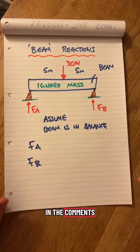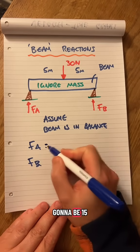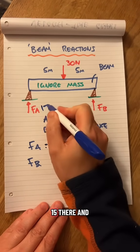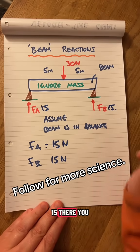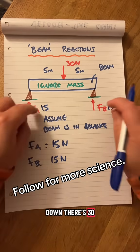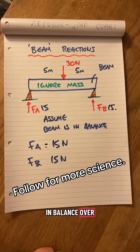Answer in the comments. The answer is going to be 15 and 15. You can work it out using moments. There's 30 coming down, there's 30 coming up. The beam is in balance, over and out.